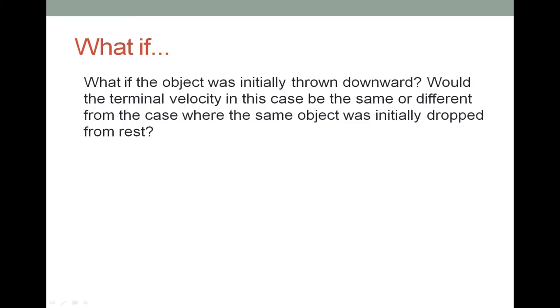What if the object was initially thrown downward? Would the terminal velocity in this case be the same or different from the case where the same object was initially dropped from rest? The terminal velocity would be the same in both, as the formula to obtain the terminal velocity, mg equals bv, does not take the initial velocity into account.